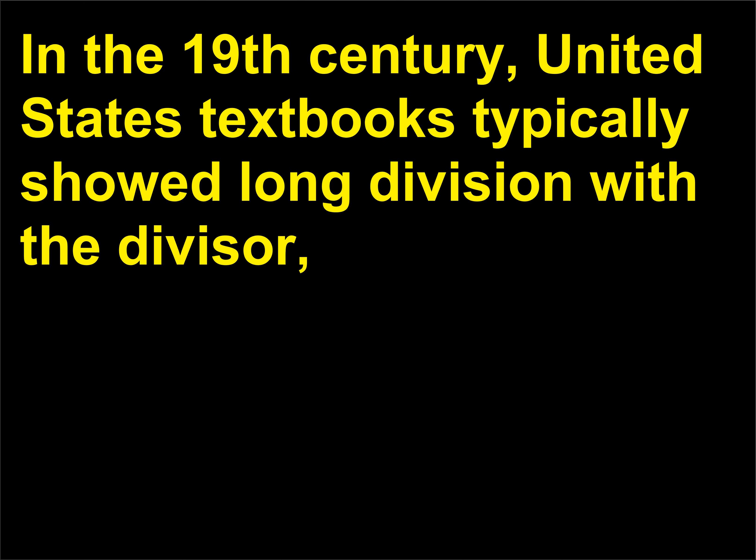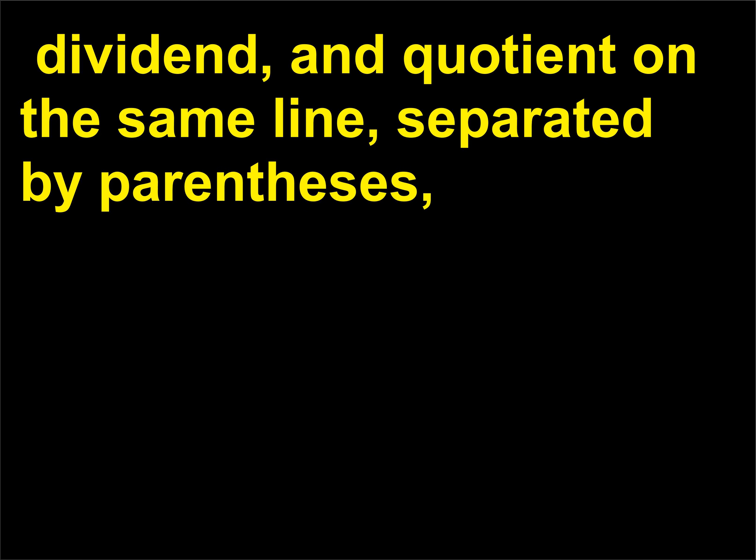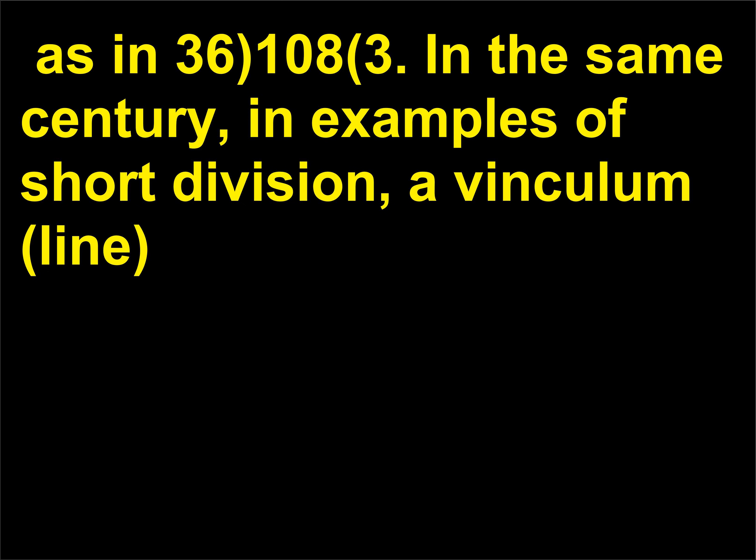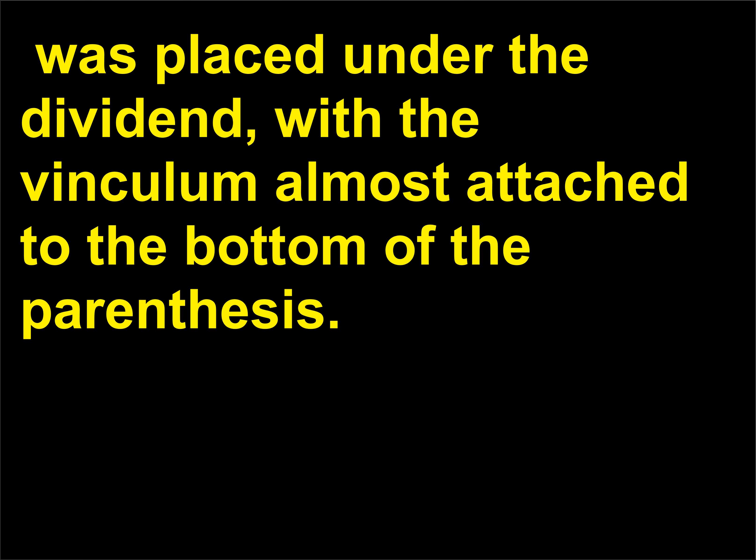In the 19th century, United States textbooks typically showed long division with the divisor, dividend, and quotient on the same line, separated by parentheses — as in 36 | 108 | 3. In the same century, in examples of short division, a vinculum (line) was placed under the dividend, with the vinculum almost attached to the bottom of the parenthesis.